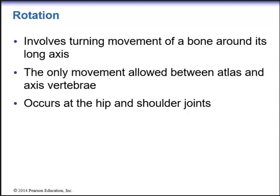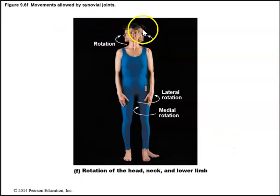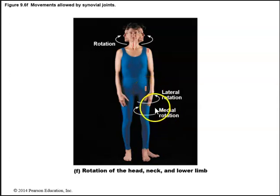Rotation involves turning movements of a bone around its long axis. This is the only movement allowed between the atlas (C1) and axis (C2) vertebrae, allowing you to turn your head at the neck. Rotation also occurs at the hip and shoulder joints, with both lateral and medial rotation of the leg.